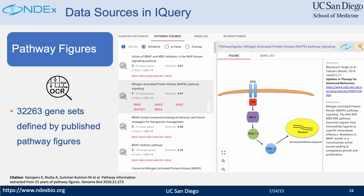The Pathway Figures tab is the result of a major collaboration between NDEX and the Pathway Figure OCR open science project from UCSF, led by Alex Pico. This data source has over 30,000 genesets in it. Each geneset is extracted from a published pathway figure using OCR, and NDEX is their main data repository. In this tab, users can view the relevant pathway figures, read the description, and follow the link on the right-hand side to read the paper.